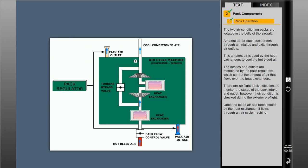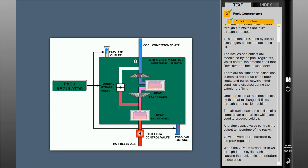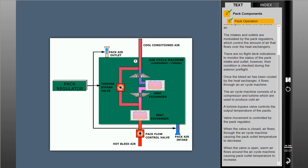Once the bleed air has been cooled by the heat exchanger, it flows through an air cycle machine. The air cycle machine consists of a compressor and turbine which are used to produce cold air. A turbine bypass valve controls the output temperature of the PACs, with valve movement controlled by the PAC regulator. When the valve is closed, air flows through the air cycle machine, causing the PAC outlet temperature to decrease. When the valve is open, warm air flows around the air cycle machine, causing the PAC outlet temperature to increase.